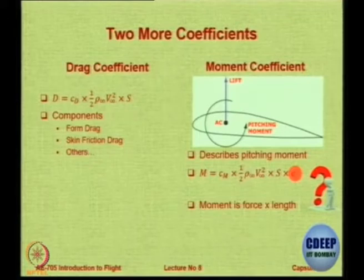Lift is a force, drag is a force, but moment is force times length, so you need a length dimension. We choose a characteristic length C, which is normally the chord length for an aerofoil. The chord length is added so that the units remain non-dimensional. To make the moment coefficient non-dimensional, this is all convention — it is not physics.